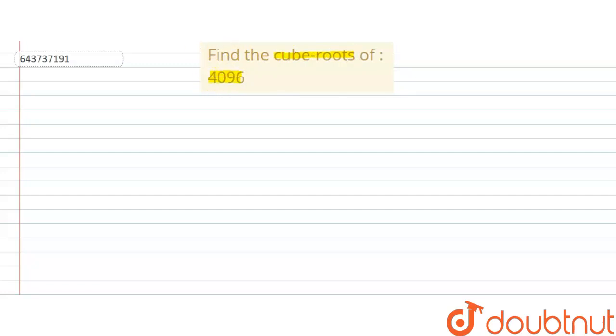So let the number 4096 is equal to a, a is equal to 4096. And what is the aim to solve this question is a raise to power 1 by 3 we are finding. So how to find, we are making first factors of this number. So here we have to make the factors of this number.